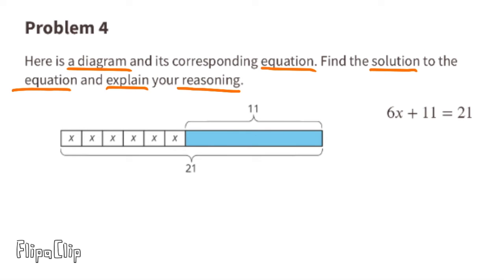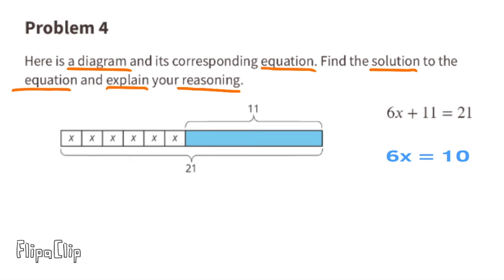Problem number 4: here is a diagram and its corresponding equation — find the solution to 6x + 11 = 21. Since 21 minus 11 equals 10, 6x must equal 10. Divide both sides by 6: x equals 10 divided by 6, which is 1.6 repeating, or as a mixed number, 1 and 2 thirds.